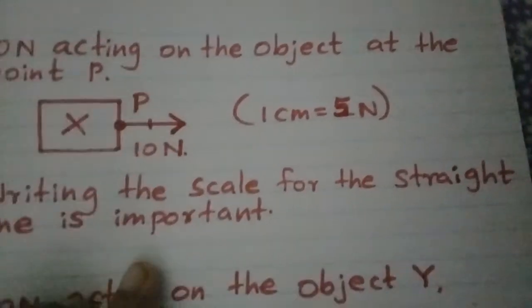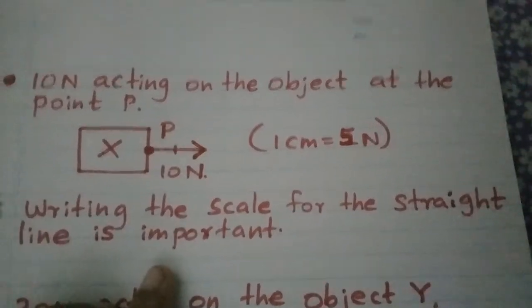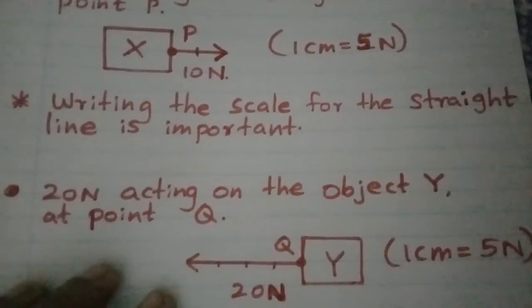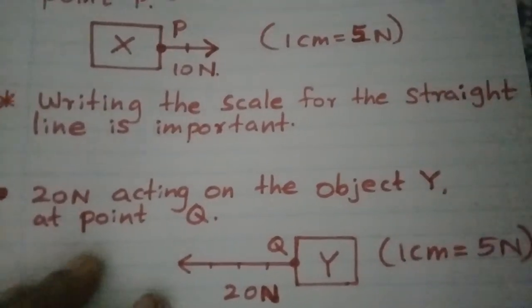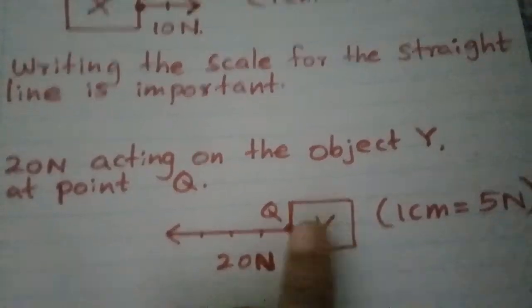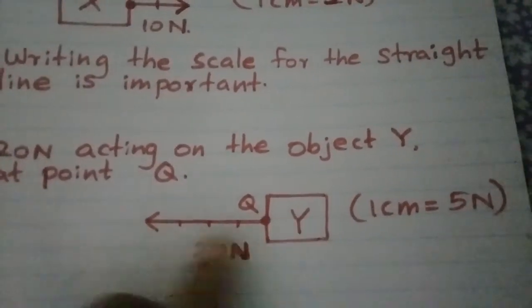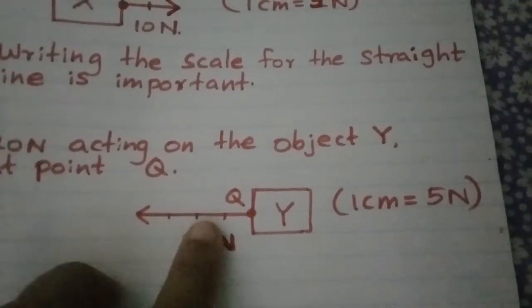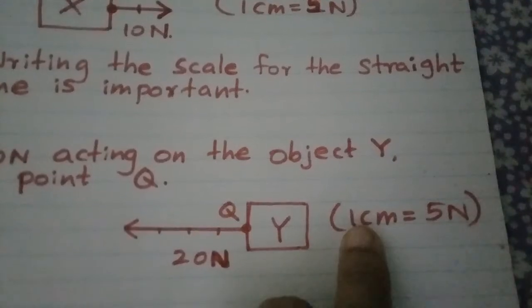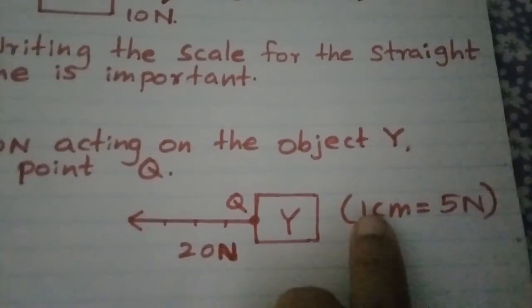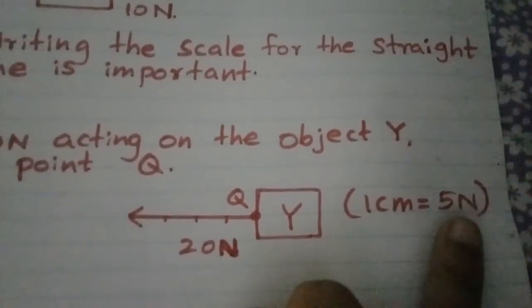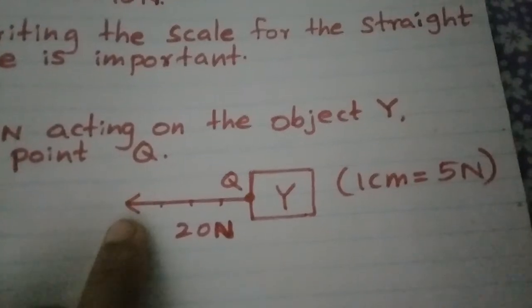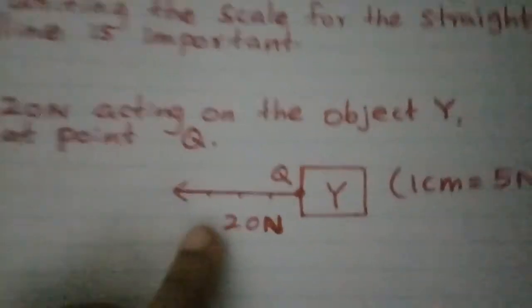Example two: 20 Newtons acting on object Y at point Q. Here Q is the point of application shown by a dot, and you can see the arrowhead indicating direction. Using the same scale of 1 centimeter equals 5 Newtons, you draw a 4-centimeter line to represent 20 Newtons. Always write the scale clearly.